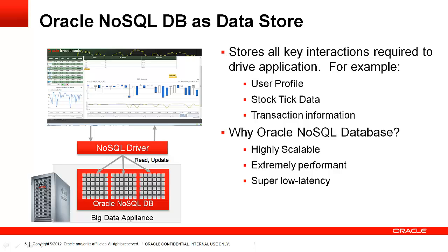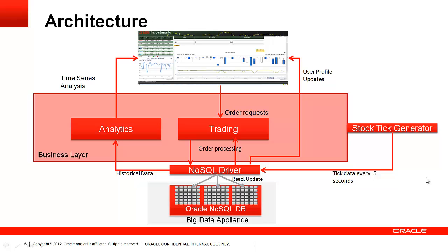Oracle NoSQL DB stores all kinds of information pertaining to the application: user profile information, the user's personal information as well as portfolio information, stock tick data which occurs every 5 seconds, and transactional information which is the customer's buy-sell trading request. The reason we use Oracle NoSQL DB is its low latency, easy scalability, and lowest dollar per operation.